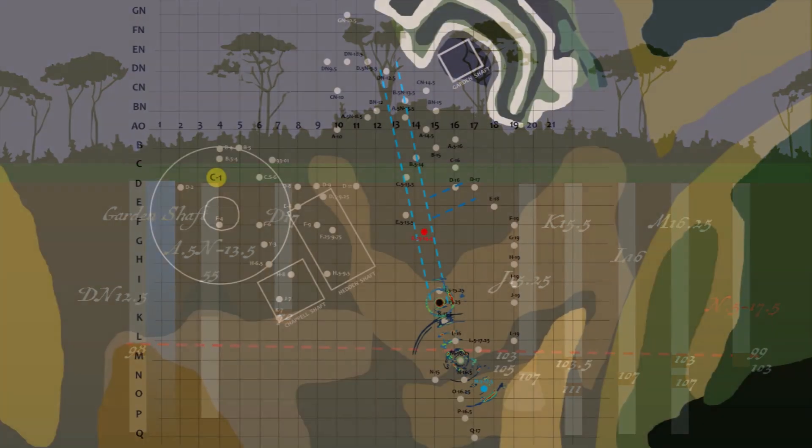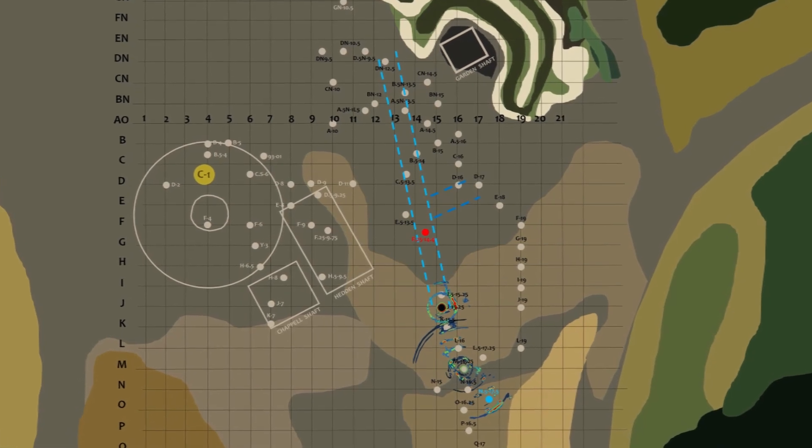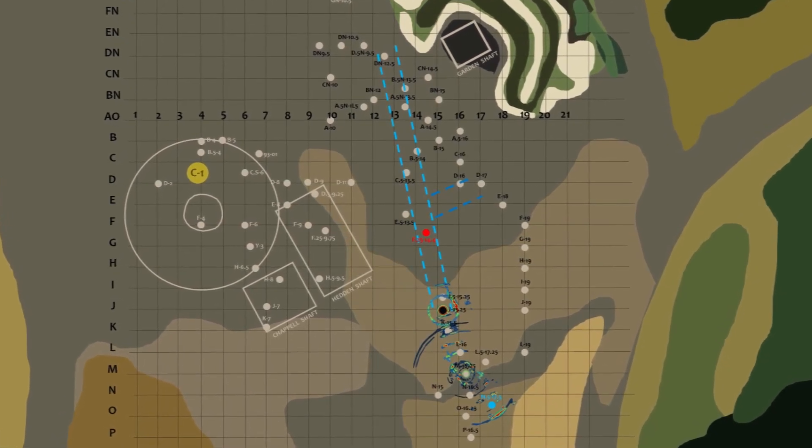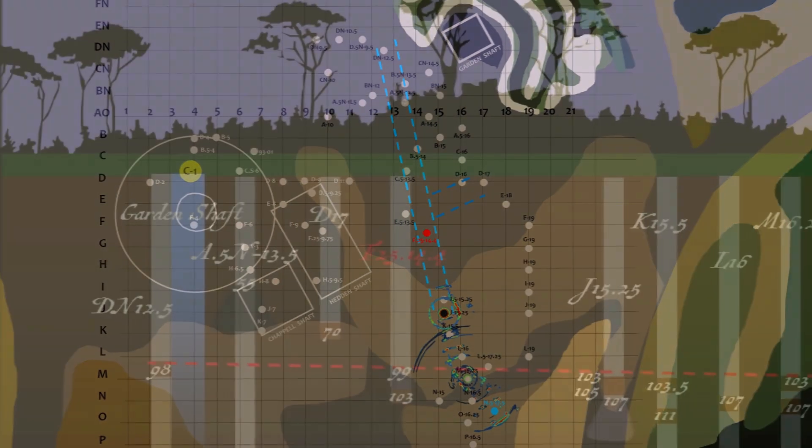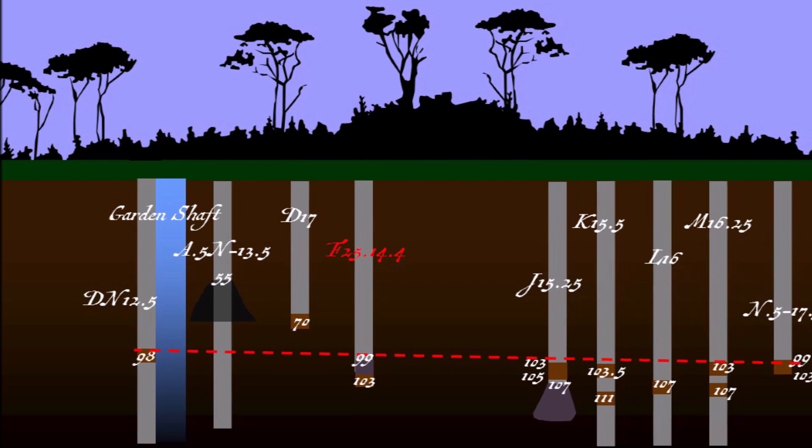In the next scene, the crew drills borehole F.25-14.4 at a location prescribed by Craig Tester. Members of the team examine a core sample taken from a depth of 100 feet and find wood at a depth of 103 feet.